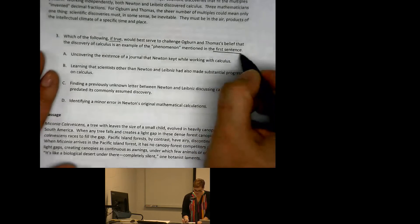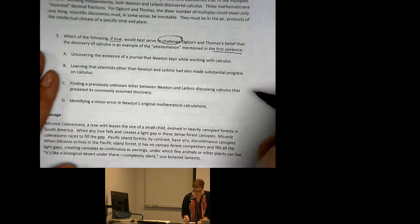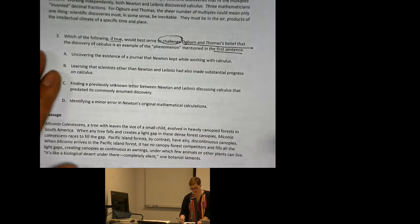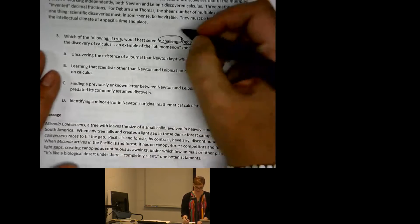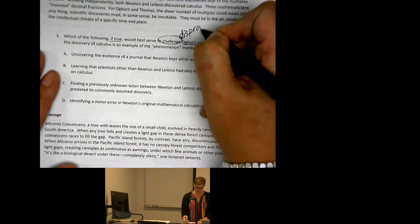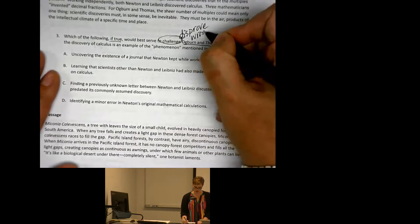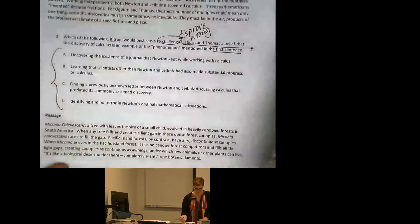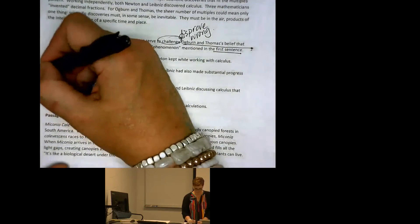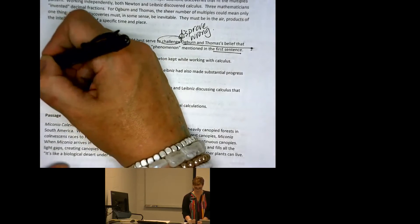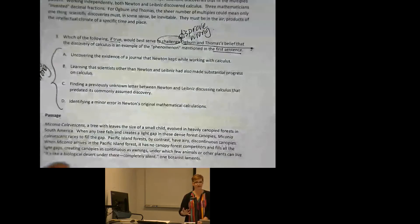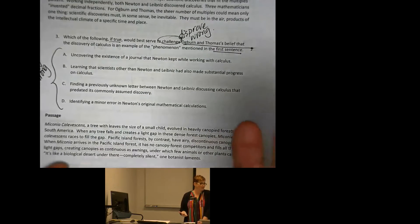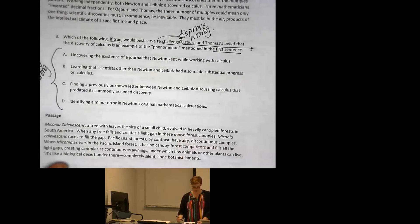Starting a clean page, question three, A B C D. This question is even wordy, so: 'which of the following, if true, would best serve to challenge Auburn and Thomas' belief that the discovery of calculus is an example of the phenomenon mentioned in the first sentence?' We have the first sentence. We have 'challenge these people's belief.' We haven't read the passage yet, but we can pull out even without reading it: to challenge something means to disprove — to show that it's wrong. So we know that of these four options, one of them is going to show that it's wrong; the others either won't show that it's wrong or will show that it's right.